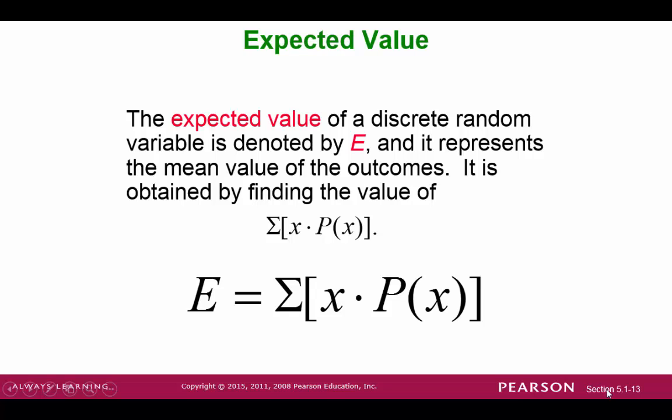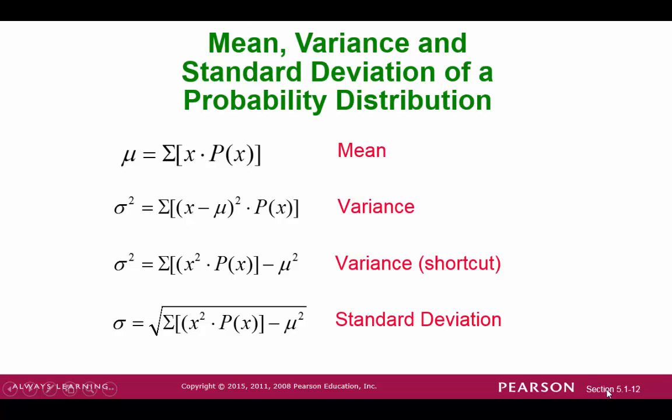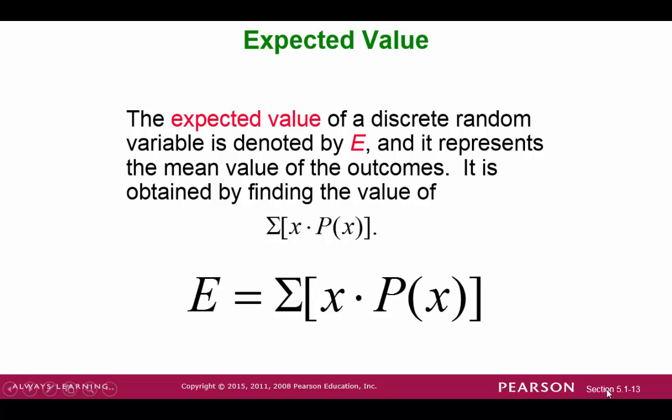A common term used when studying probability distributions is the expected value. Expected value for a discrete random variable is the sum of x times p of x. You might think that this looks familiar. And in fact, if we take a look at the previous slide, we see that this is the exact same formula as the mean. So the expected value is another name for the mean.